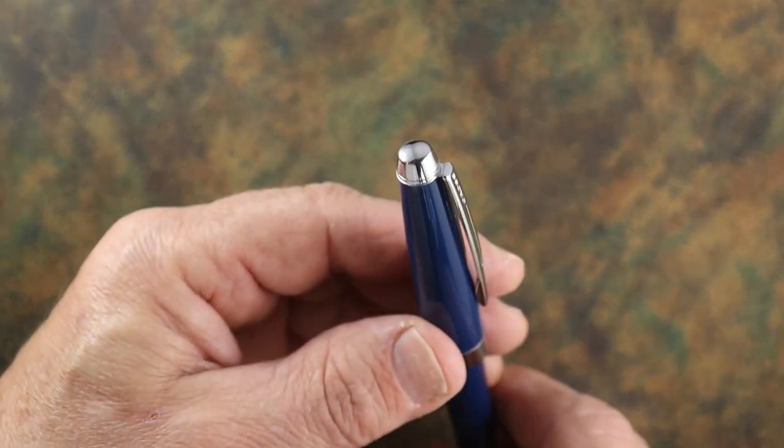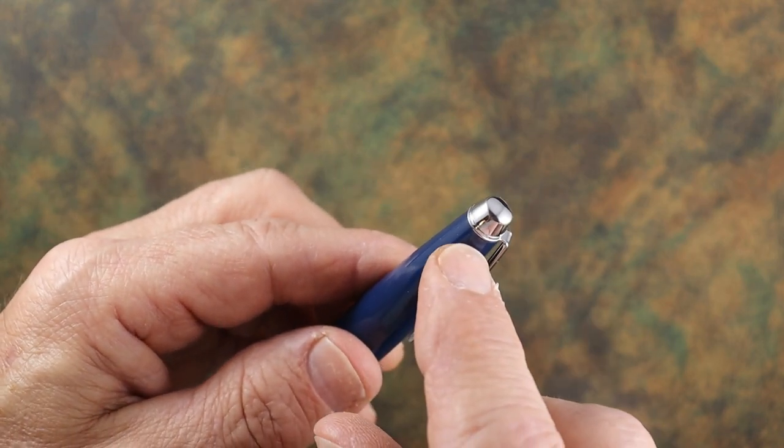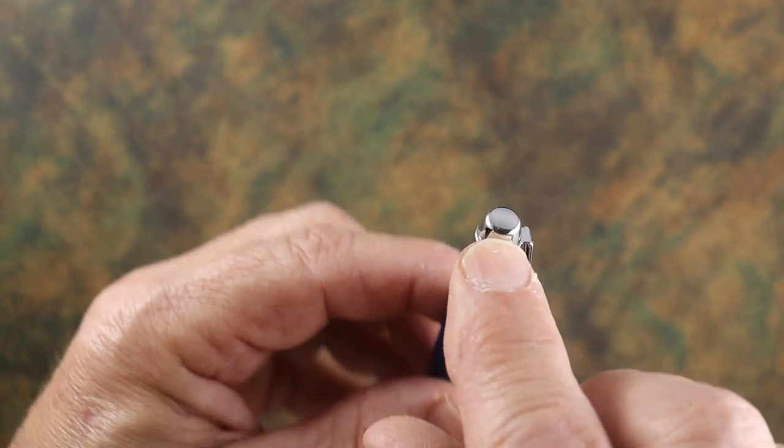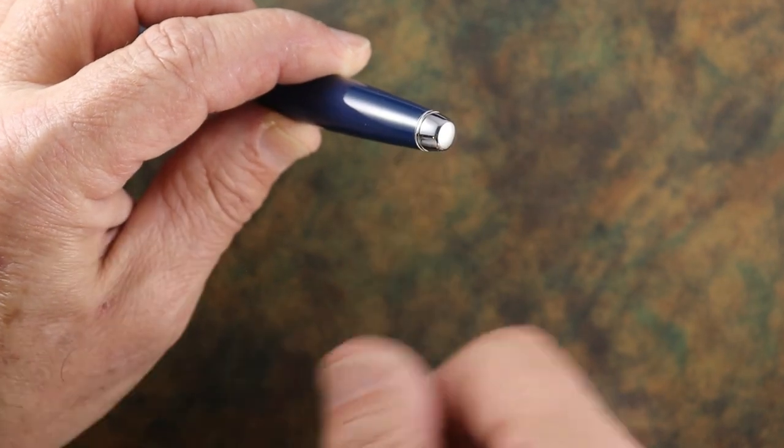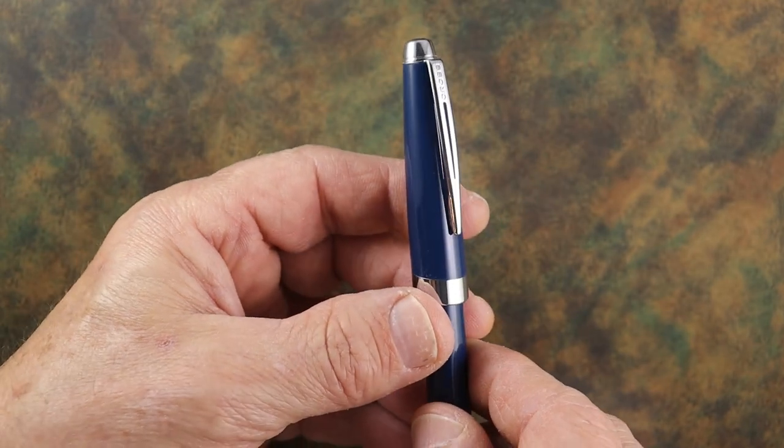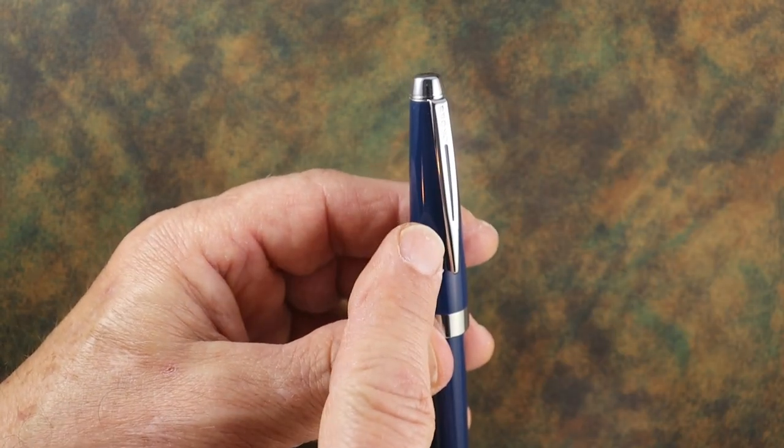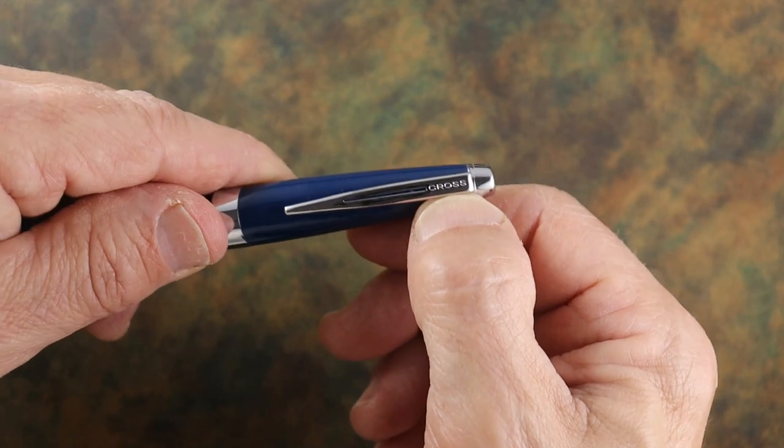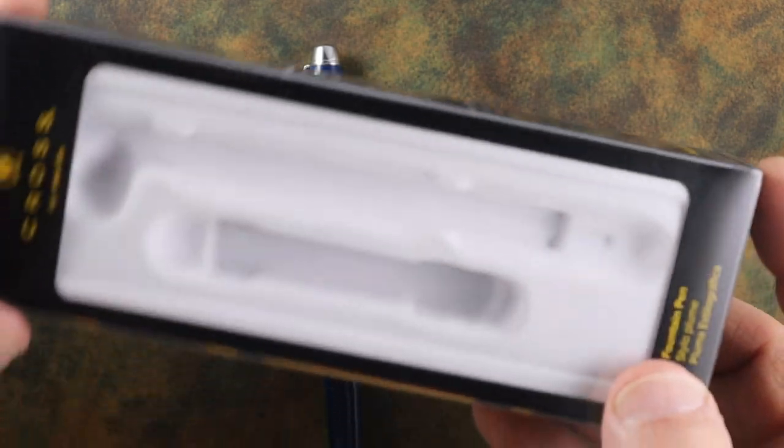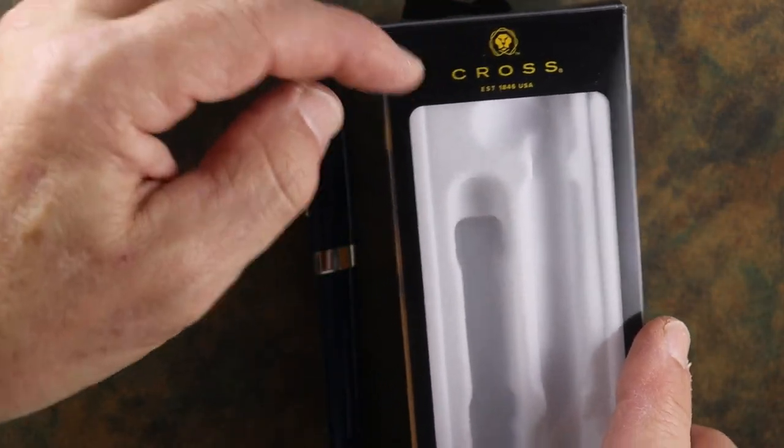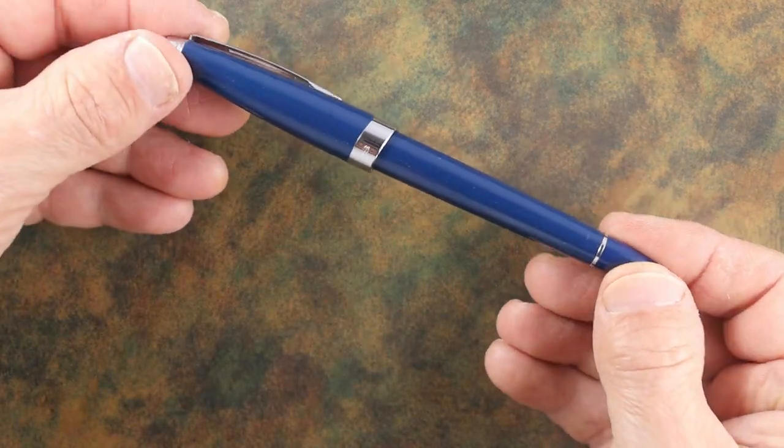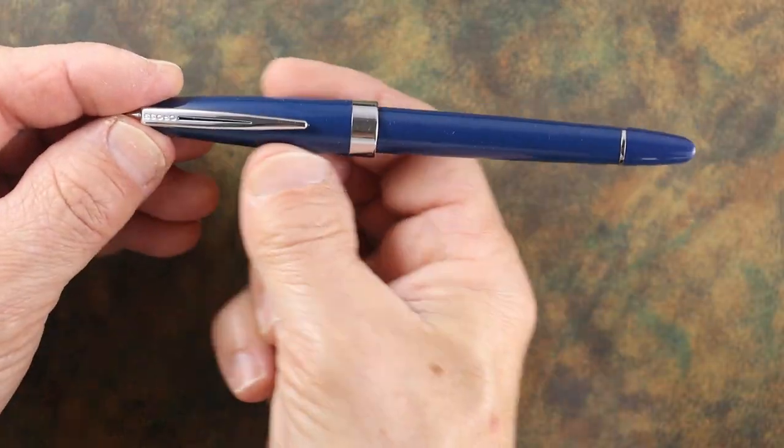On the cap finial, it starts at the tip there, tapers down just a little bit, and it's just rounded on the end. The clip has a little cut out around the middle and then it just says Cross right there. I thought this was interesting: Cross is a USA company, yet as you can guess, it's made in China. American company but stuff made in China.